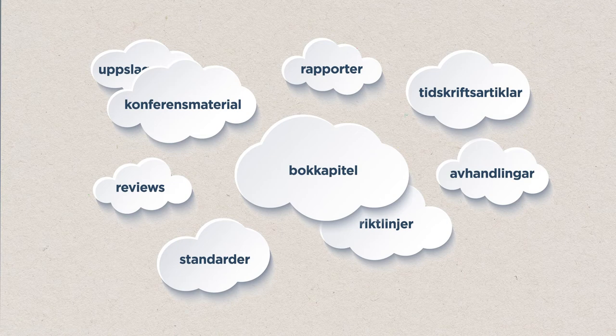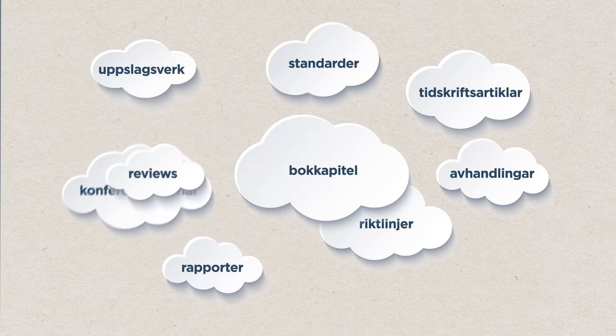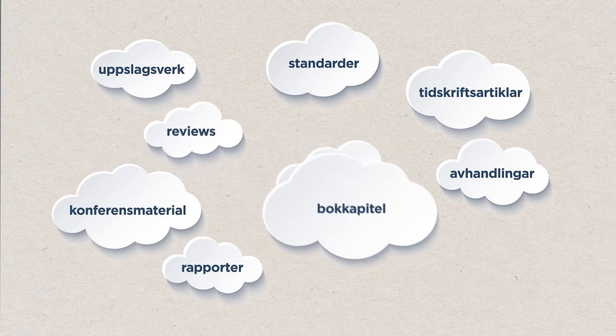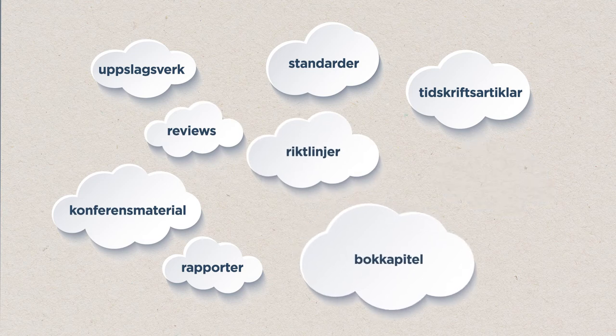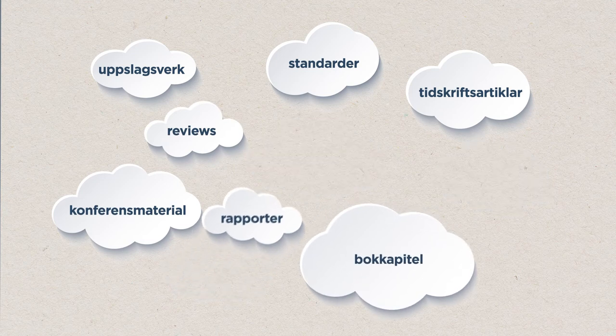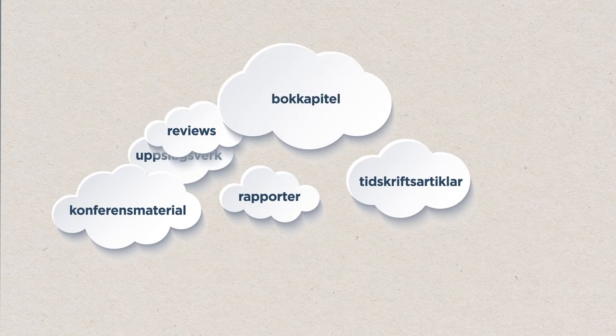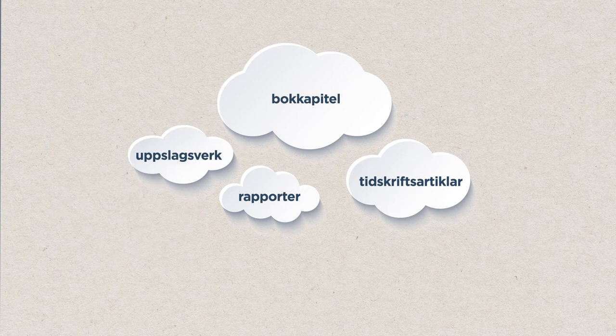The material that contains the best match for your search terms will appear at the top. You can then filter by type of material, year of publication, language, and so on. Search engines and databases search among different types of material and work in slightly different ways. Depending on what information you are searching for, you then choose between a search engine or a database.